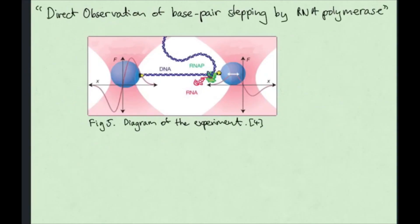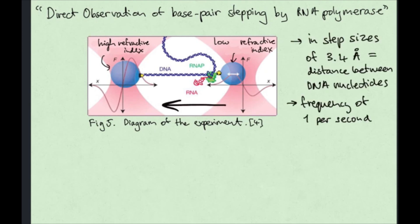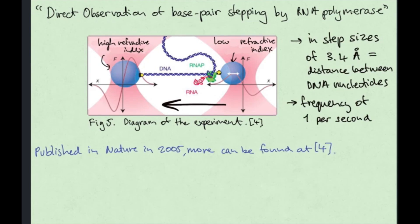One experiment looked at the mechanism of DNA transcription by attaching a DNA template strand to a bead held in a stiff trap, and the RNA polymerase enzyme to a bead held in a weak trap. As the RNA moved along the strand, scientists were able to analyze the motion and found that it transcribed roughly one nucleotide per second.